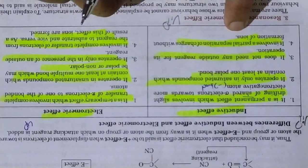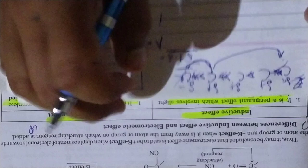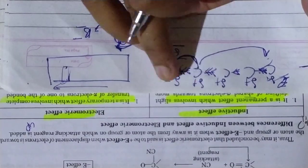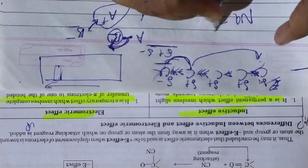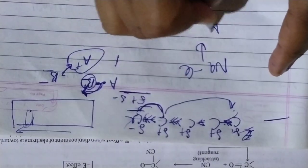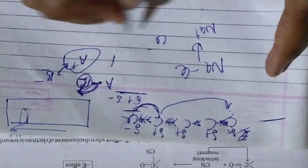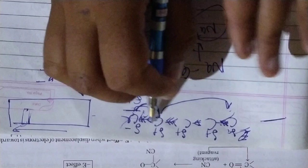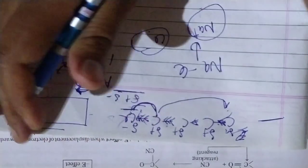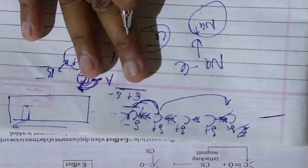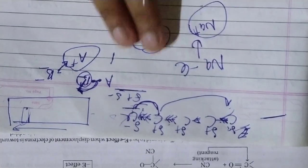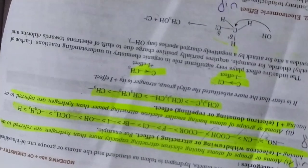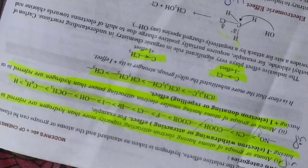The inductive effect involves a partial separation of charge without formation of ions — partial positive and partial negative — and it is not the same as ion formation. There are two types: I positive (I+) and I negative (I-).